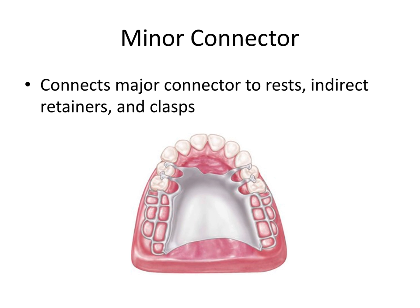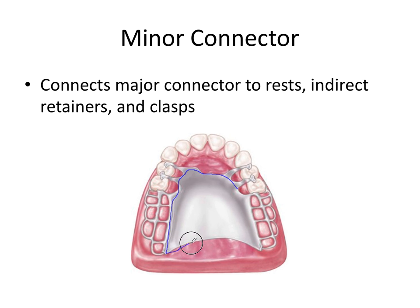Lastly we have the minor connectors, which there's a lot less to remember about. They simply connect the major connector to the rests, indirect retainers, and clasps — components we'll cover in the next couple of videos. Think of the major connector as the tree trunk and the minor connectors as the branches that reach out and connect to the other components like the rests and clasps. You can see all of the minor connectors illustrated in this image.